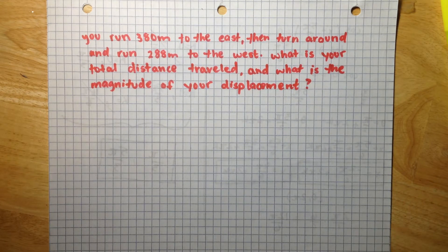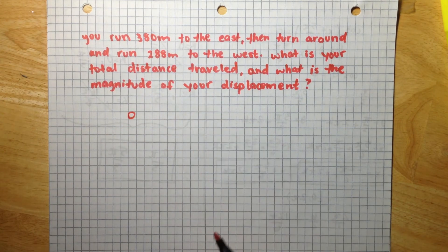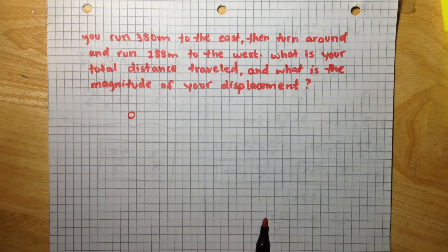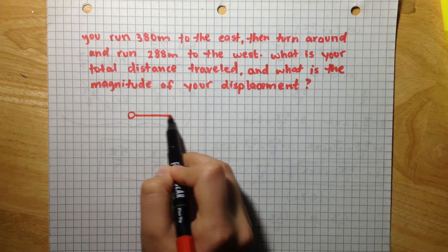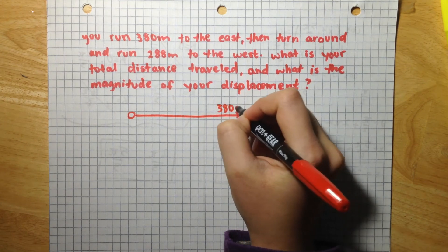So, let's draw this out. This is you, for example, and you run 380 meters to the east. So, let's say this is 380 meters,